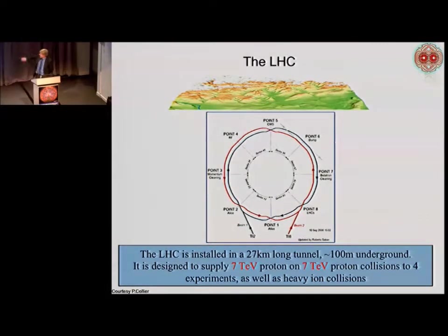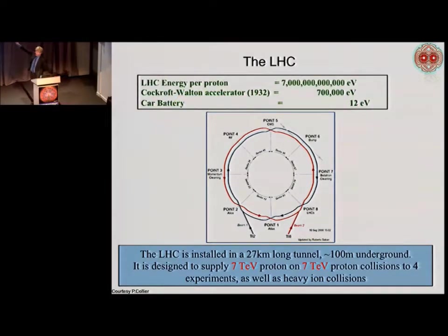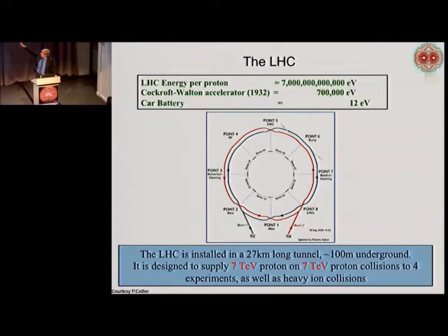Here we have the collision points where you do the physics. You collide particles head-on, and if you've got enough energy you'll produce the Higgs boson — and we've shown that works. The energy of each proton is in electron volts: the energy required by an electron passing through one volt — a typical battery is about 12 electron volts. You go up to 700,000 electron volts for the very first accelerators, and then to 7 TeV for the LHC. It's a lot of energy.